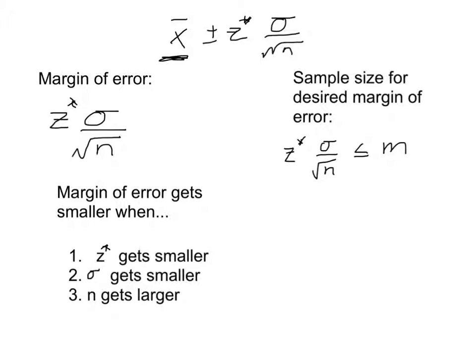The margin of error can get smaller with three different things. It's really important to understand the relationship when this will get smaller and when this will get bigger. It will get smaller when your Z star gets smaller, so when you're less confident in your answer. When the standard deviation gets smaller, your margin of error gets smaller, but you can't really manipulate that much. The third thing you can manipulate is N, your sample size. You can increase your sample size and therefore have a smaller margin of error.